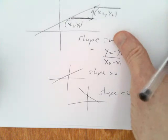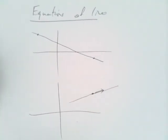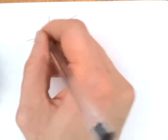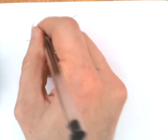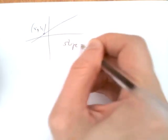We want to say what is the line with a given slope through a given point. If we had some point x1,y1 and we wanted the slope to be some given value m, which is given to us